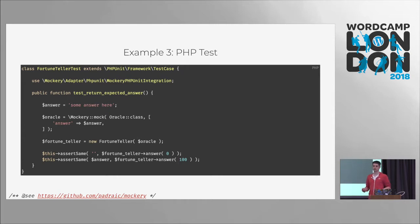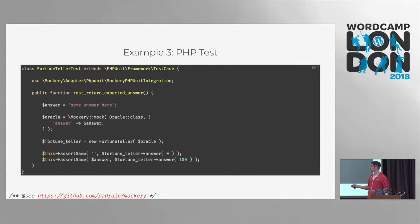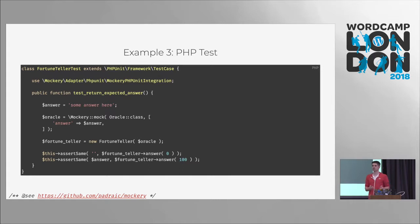In the test method, we instantiate an object of the class we want to test. Then we call the method with zero amount of money — which is not enough because we want five or more — and the amount 100 which is enough. We expect the empty string in the first case, and if we spend enough money we expect some answer. Answer in our test is just a hardcoded string. We create with Mockery an object that has an answer method, so you can call answer on that object and it will return the value stored in answer.